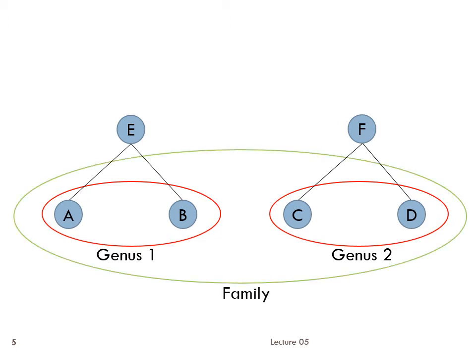Meanwhile, both genera 1 and 2 belong to a family. That says that both species E and F are descended from a more distant ancestor, G. Therefore, with a properly constructed biological taxonomy, you can easily tell how recently two species shared a common ancestor by finding the smallest category to which they both belong. The smaller the category, the more recent the common ancestry.